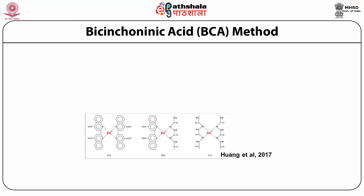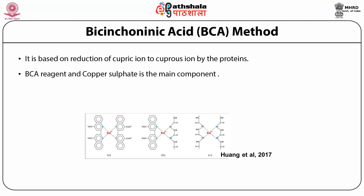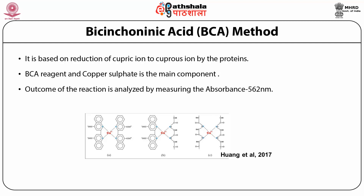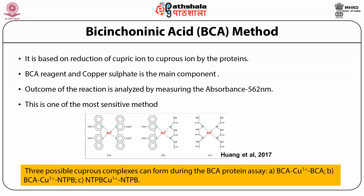We discuss the bicinchoninic acid, simply called the BCA method. It is based on reduction of cupric ion to cuprous ion by the proteins. BCA reagents and copper sulfate are the main components, and the reaction outcome is analyzed by measuring absorbance at 562 nanometers. This is one of the most sensitive methods and requires a minimal amount of protein. You can see how two polypeptide chains interact with the copper ion forming the complex — BCA copper+1 BCA, BCA copper+NTBP, and NTBP copper+NTBP — and this method is used for estimation of protein at minimal concentration.